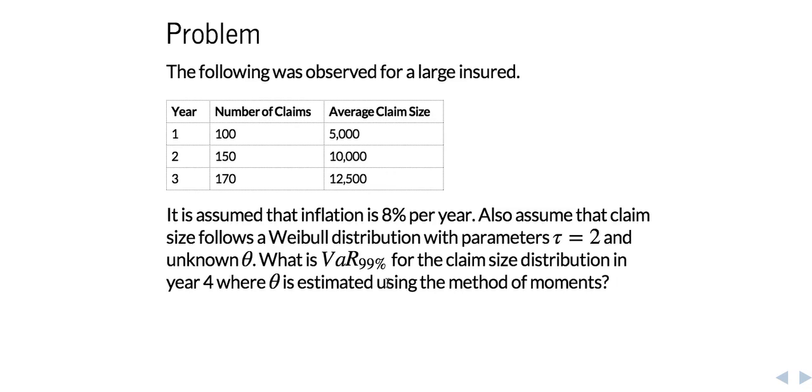Okay, so key words here, to me the biggest important key words here are year 4 really, because that tells us that we need to apply an appropriate amount of inflation to consider everything on the basis of year 4 dollars, when we calculate our θ as well as our value at risk. So bear that in mind.